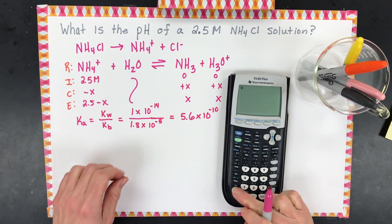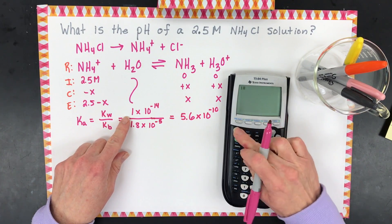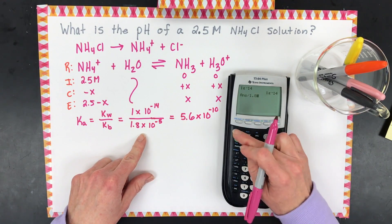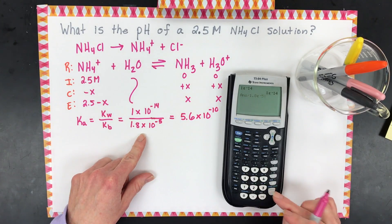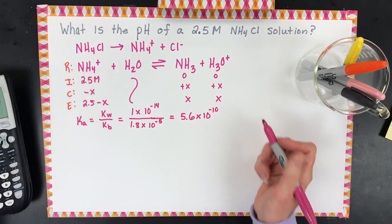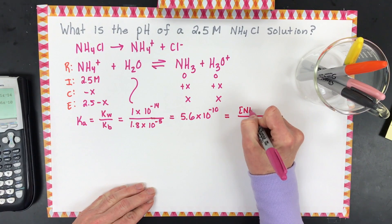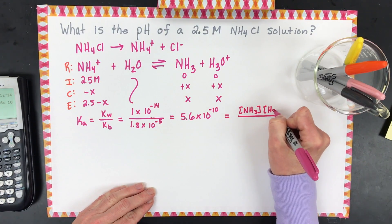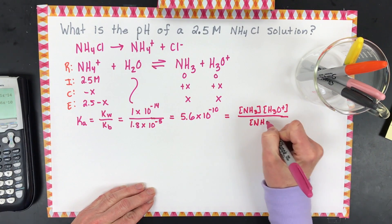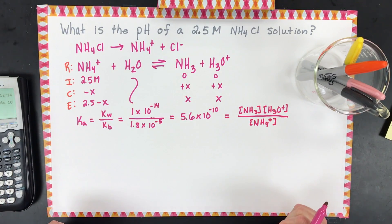Let me show you how I got that. You're going to take 1×10⁻¹⁴ and divide by 1.8×10⁻⁵. I get 5.555, but keeping two sig figs that's 5.6×10⁻¹⁰. Next, that Ka equals the concentration of ammonia formed times the concentration of hydronium formed, divided by the ammonium ion concentration — products over reactants, just like any other equilibrium.